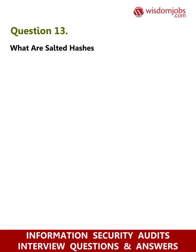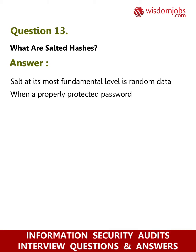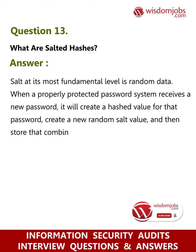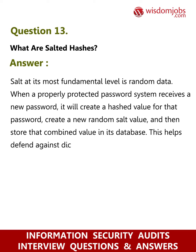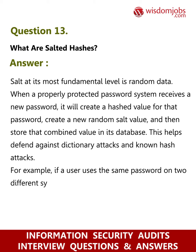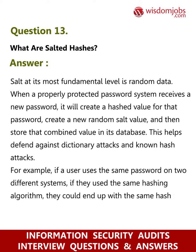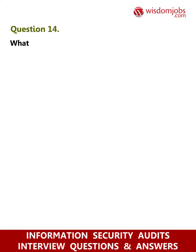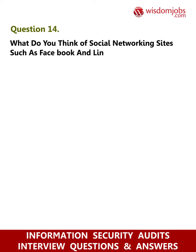Question 13: What are salted hashes? Answer: Salt, at its most fundamental level, is random data. When a properly protected password system receives a new password, it will create a hashed value for that password, create a new random salt value, and then store that combined value in its database. This helps defend against dictionary attacks and known hash attacks. For example, if a user uses the same password on two different systems with the same hashing algorithm, they could end up with the same hash value. However, if even one system uses salt with its hashes, the values will be different.